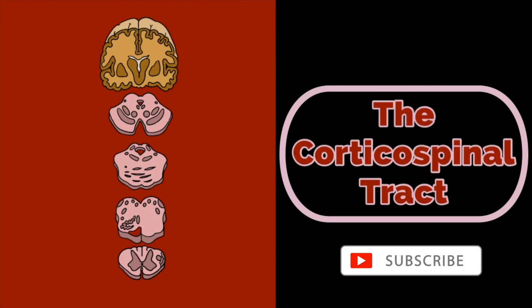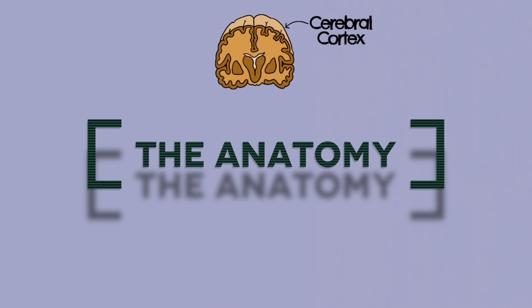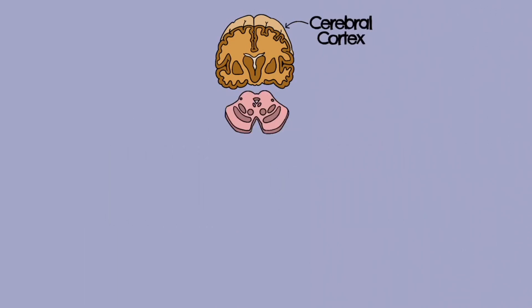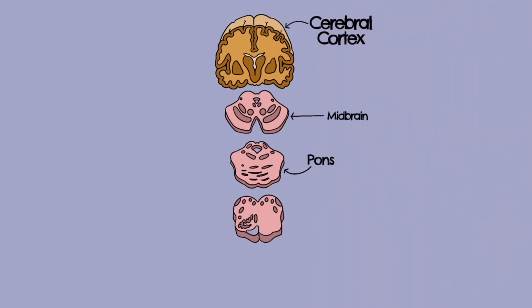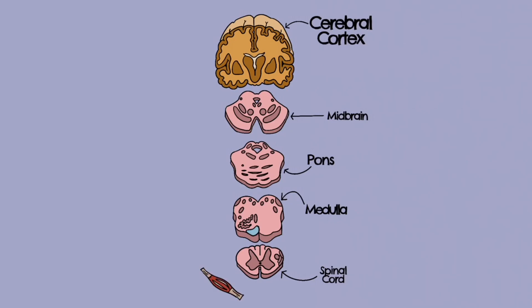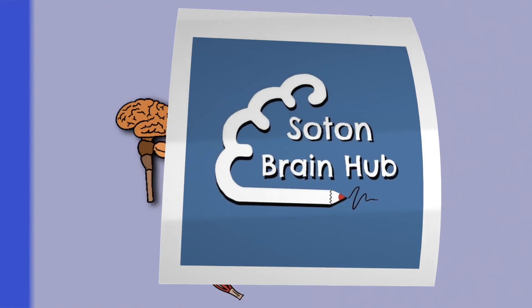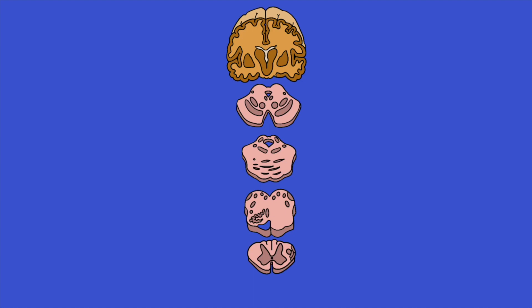Welcome to this video covering one of the most important tracts: the corticospinal tract. We're going to start our journey in the cerebral cortex, travel through the midbrain, go through the pons, and through the medulla oblongata, then enter the spinal cord to see how the tract innervates muscle to initiate and control voluntary movement. We'll mainly be focusing on the lateral corticospinal tract, which accounts for 85% of the fibers and goes to the limbs. There is also an anterior corticospinal tract which goes to axial and trunk muscle groups for stability and balance.